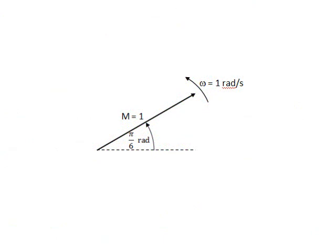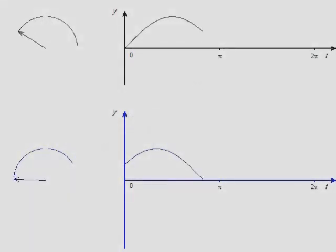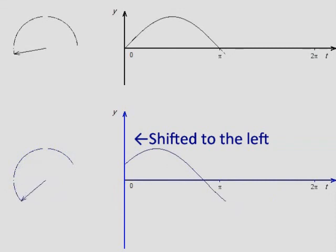The phasor is now given a different phase angle, while the angular velocity and magnitude are both fixed to a value of 1. In our first example, the phase angle is pi over 6 radians. Vertical components are being projected as usual. The sine wave appears to be shifted to the left when compared to the original.